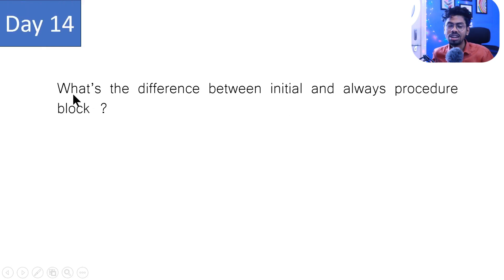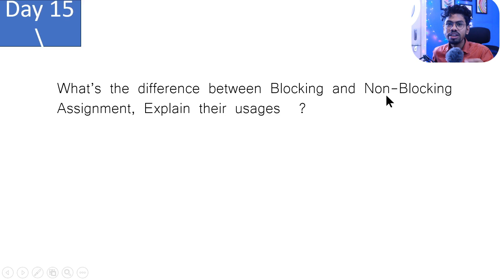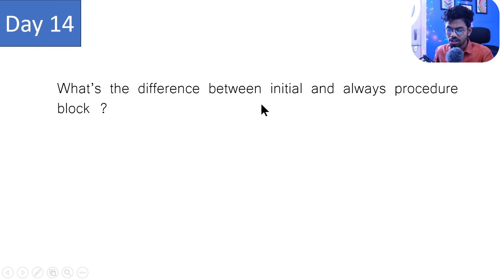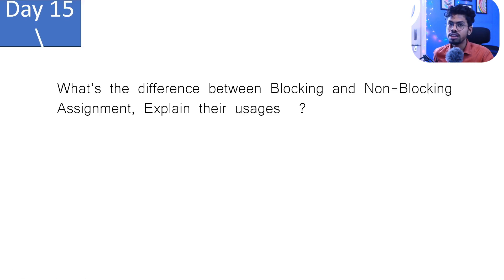Now, the last day's question: what's the difference between initial and always blocks? In simple words, the initial block executes only once at the beginning of the module, while always keeps running like an infinite loop — but only when something in the sensitivity list changes. Please write your answer in your own words in the comments. Today's question: what is the difference between blocking and non-blocking assignment? Comment your answer, and I'll see you in the next class. Tata, bye bye, and happy Engineers Day again!